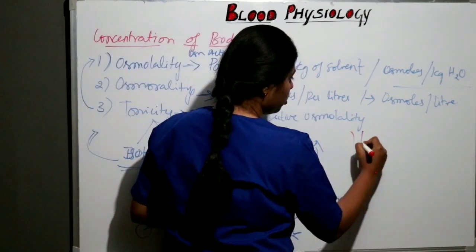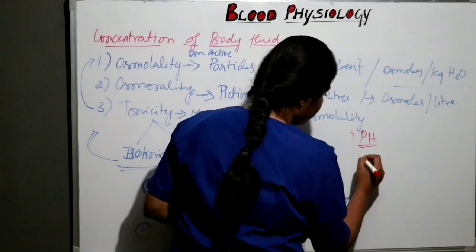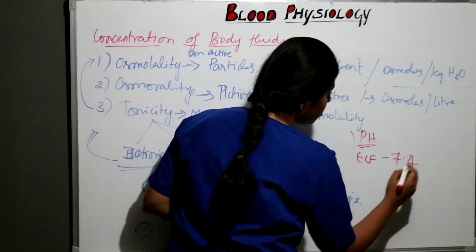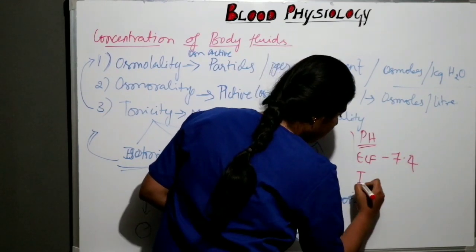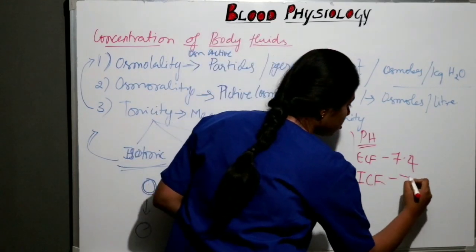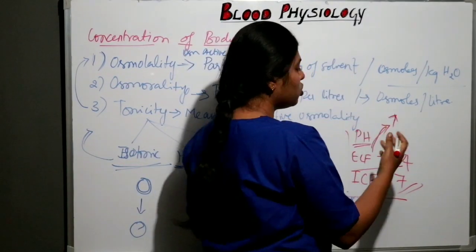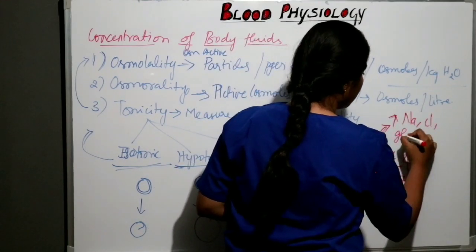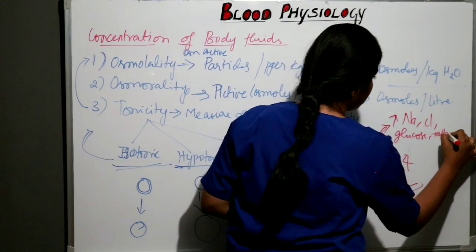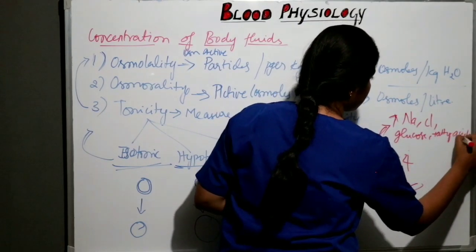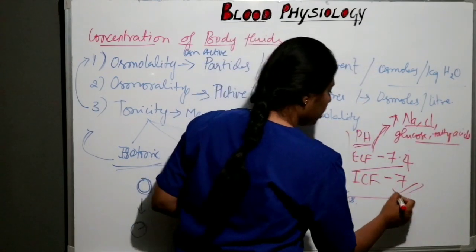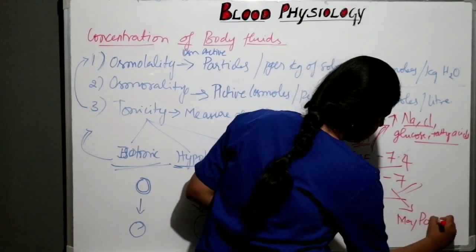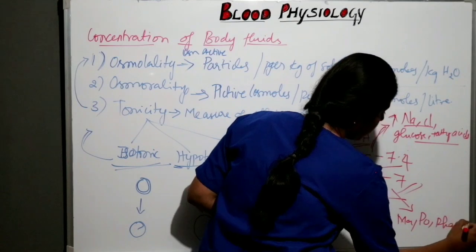Let's discuss the pH of ICF and ECF. The pH of ECF is 7.4, slightly alkaline. The pH of ICF is neutral. ECF usually consists of large amounts of sodium, chloride, glucose, and fatty acids. ICF contains large amounts of magnesium, potassium, phosphates, etc.